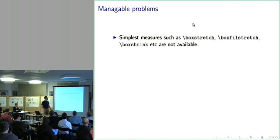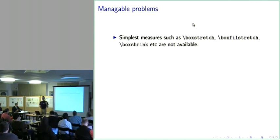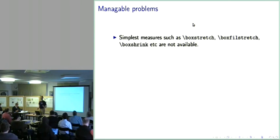Simple things such as box stretch, box fill stretch, and box shrink — invented names of mine — are just not available. If you have a typeset box with stretch and shrink components, you can only ask for its natural size; you can't ask how much shrink is present. If you're doing typesetting tasks, trying to do an optimization to place things on a page and know how good or bad it will look, you don't even have the measures available to get that information.